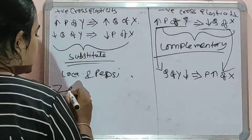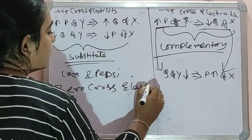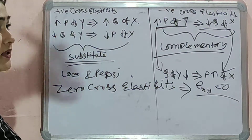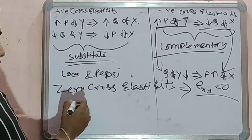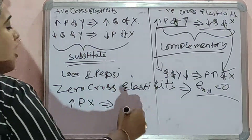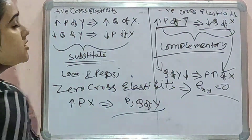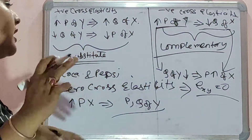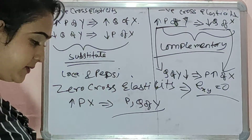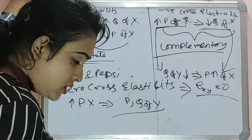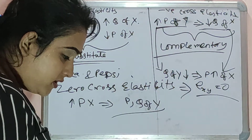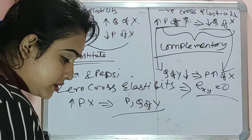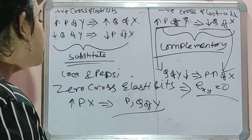Zero cross elasticity means E(XY) equals zero. We get zero cross elasticity when both goods are unrelated — an increase in the price of one commodity will not have any effect on the quantity demanded of the other. For example, food and TV are totally unrelated goods, so they will have zero cross elasticity. A change in the price of one commodity Y does not affect the demand for the other commodity X if the two goods are not related to each other.